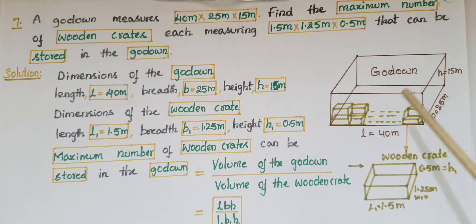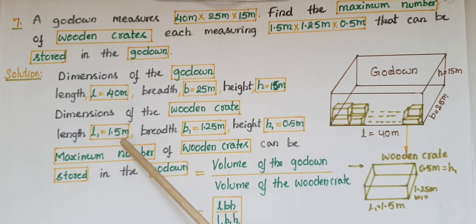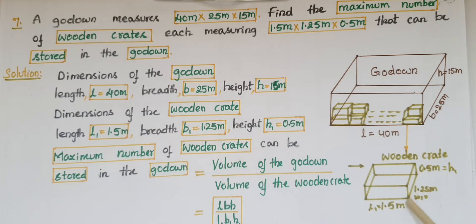The dimensions of the godown are given: length is equal to 40 meters, breadth is equal to 25 meters, and height is equal to 15 meters. The dimensions of the wooden crate are also given: l₁ equals 1.5 meters, b₁ equals 1.25 meters, and height h₁ equals 0.5 meters.